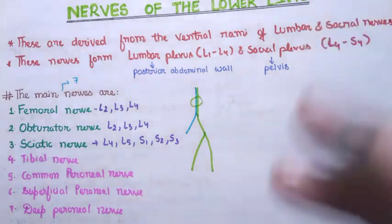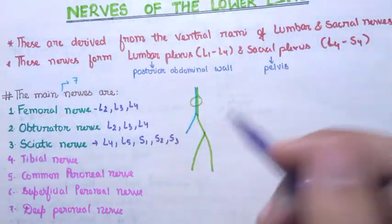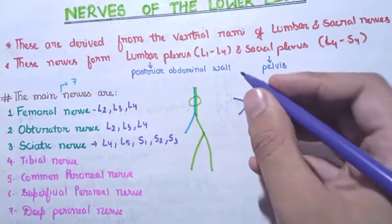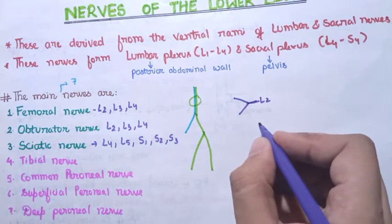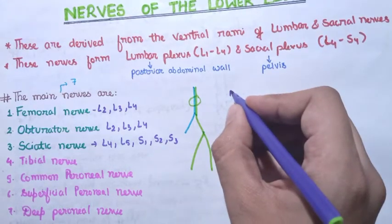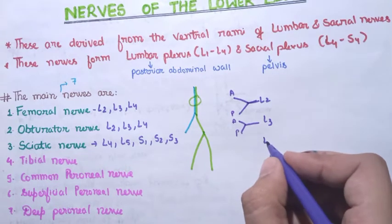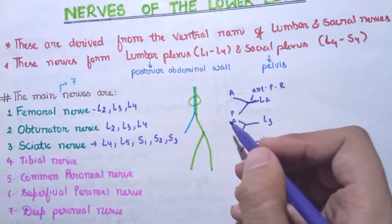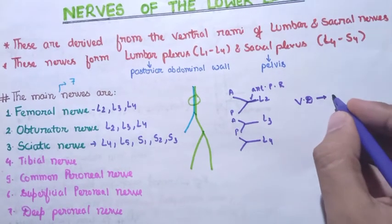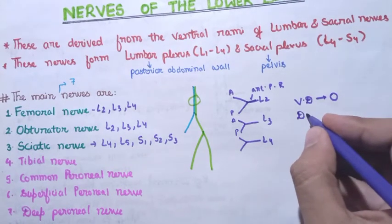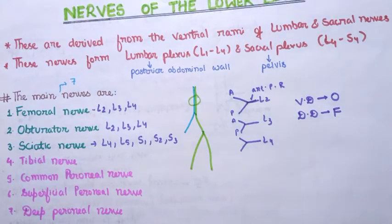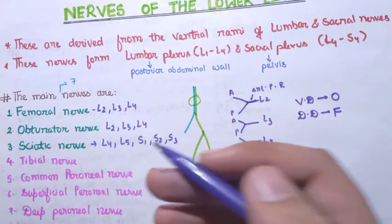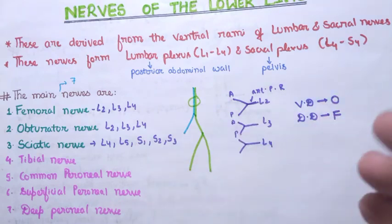You might be wondering how the femoral and obturator nerves have the same root value. It is quite simple. The ventral primary rami has two divisions: an anterior division and a posterior division. For L2, L3, and L4, all the anterior or ventral divisions form the obturator nerve, and all the posterior or dorsal divisions form the femoral nerve. So the femoral nerve is formed by the dorsal division of L2, L3, and L4, and the obturator nerve is formed by the ventral division of L2, L3, and L4. You can remember this by the mnemonic from the word 'video' — the video you are watching.